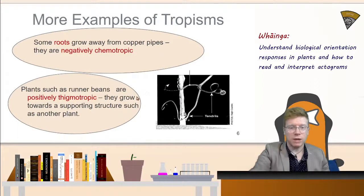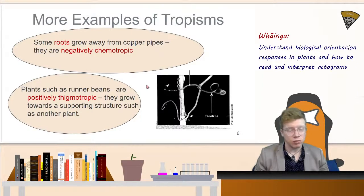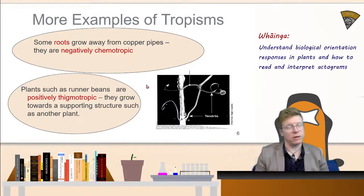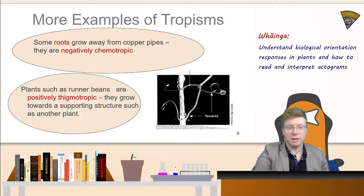Roots growing away from copper pipes show a negatively chemotropic response — they're growing away from the chemical stimulus of copper. On the other hand, thigmotropism gives a positive response in something like a vine — wisteria or runner beans — growing towards whatever they can touch. This allows the organism to grow tall without spending lots of energy, piggybacking on other structures, then expanding its leaves to gain more energy and out-compete competitors. Think about the adaptive advantage this provides.